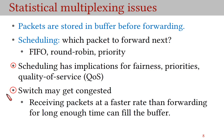Another issue that arises with statistical multiplexing is when sources send packets at a combined rate higher than the switch is able to forward. If this continues long enough, the buffer will get filled and further incoming packets have to be dropped. This situation is referred to as congestion. Congestion is harmful and must be avoided. We will discuss how to deal with congestion later in this course.